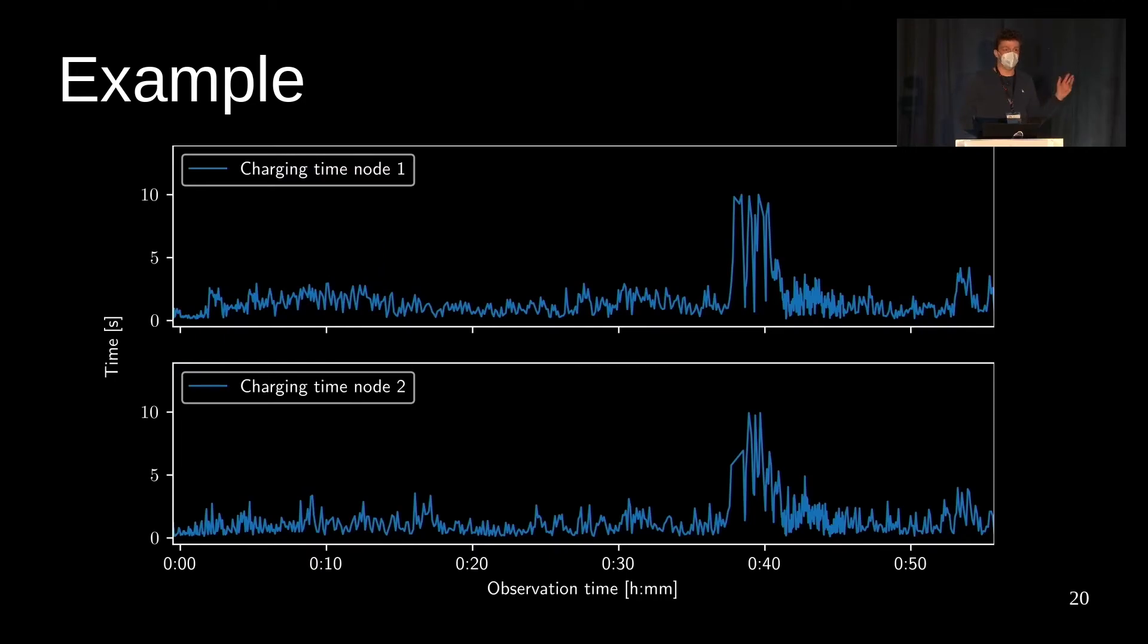Here's an example trace from the testbed. The two graphs show the charging times of two nodes mounted in a car. The first 35 minutes the cars are on the motorway and have varying but relatively low charging times. Then after 35 minutes the cars leave the motorway and you can see a sudden spike of the charging times.